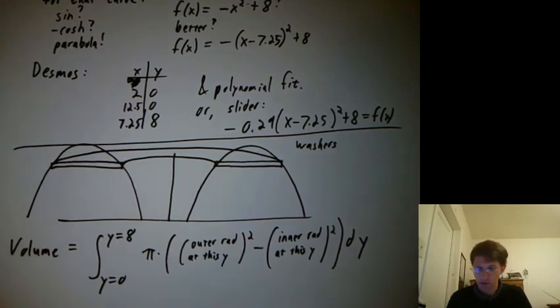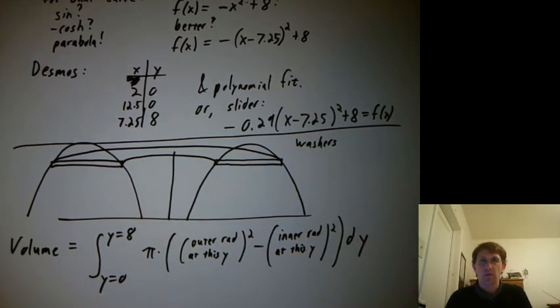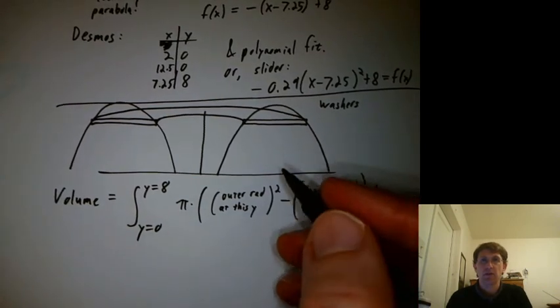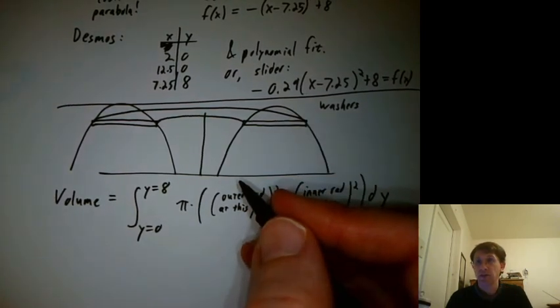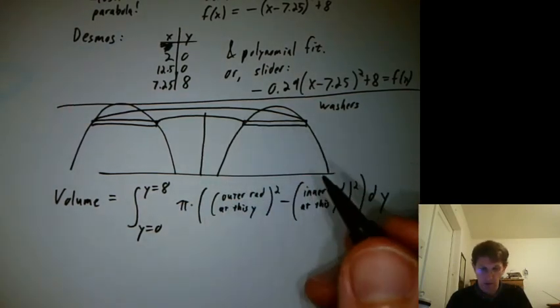So that's a perfectly good integral to write. Can I just plug f of x in here? That's my f of x. Think about how that will work. Well, f of x gives you the height at any particular x value. We want the radius, the x value, at any particular height.